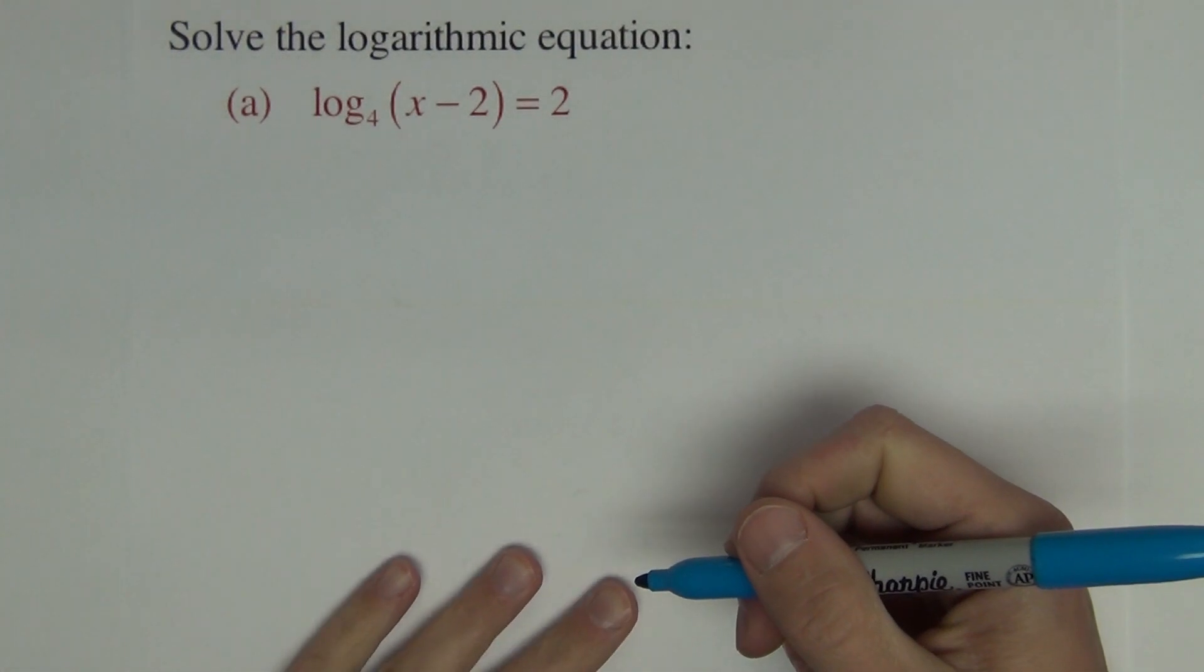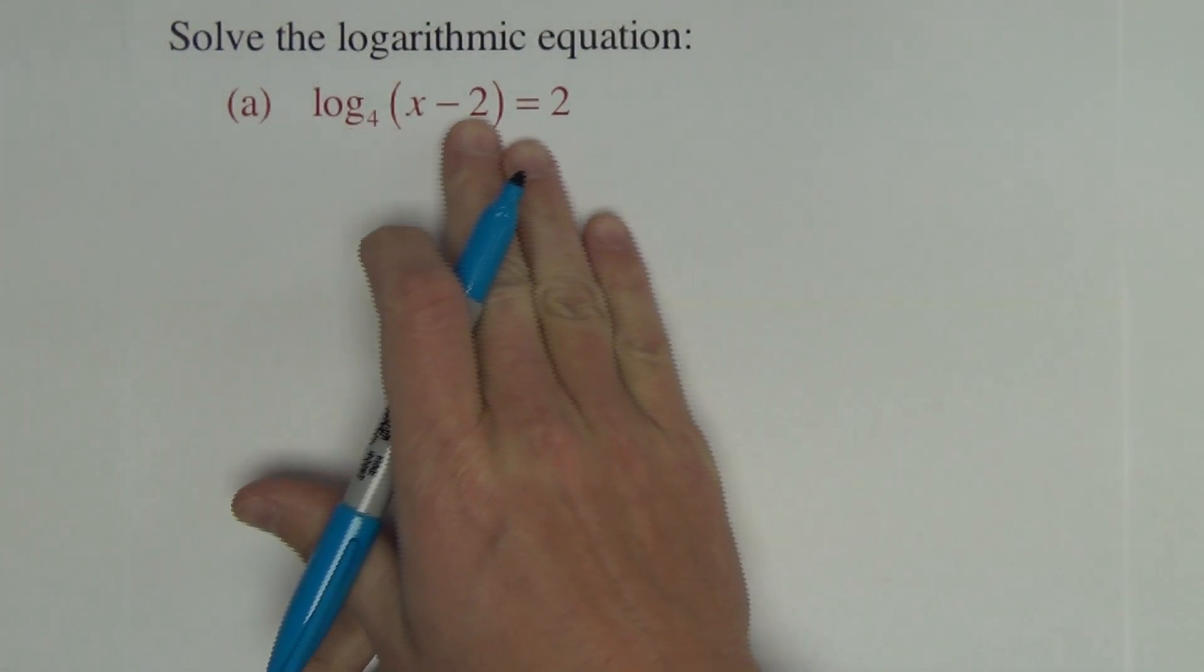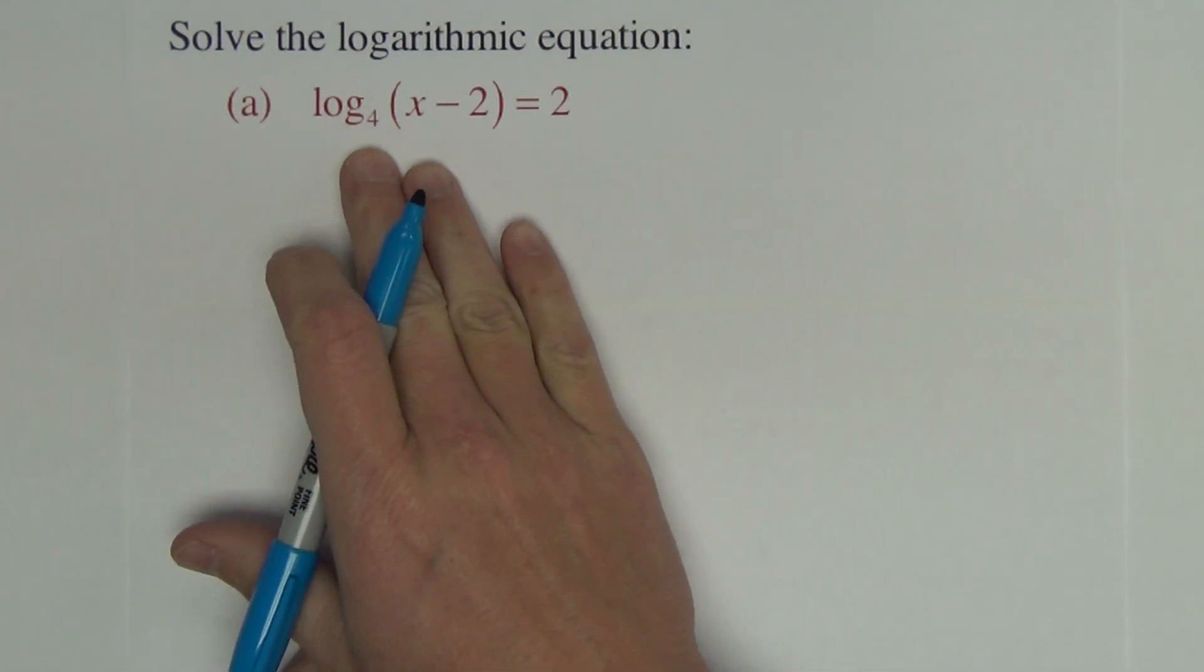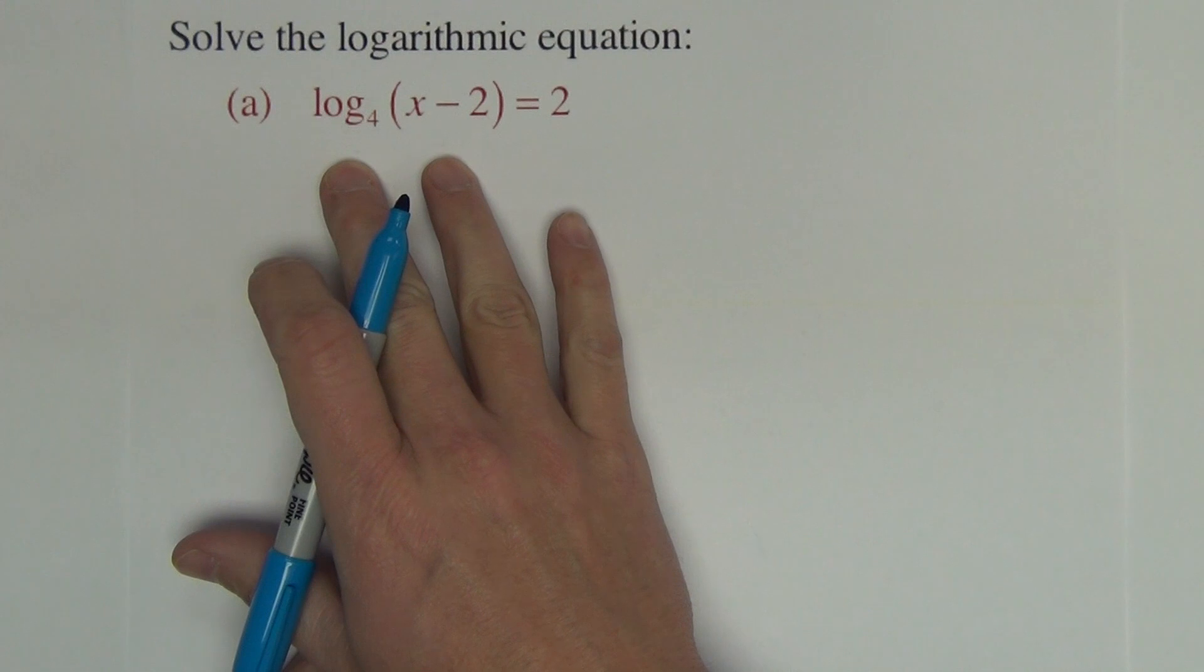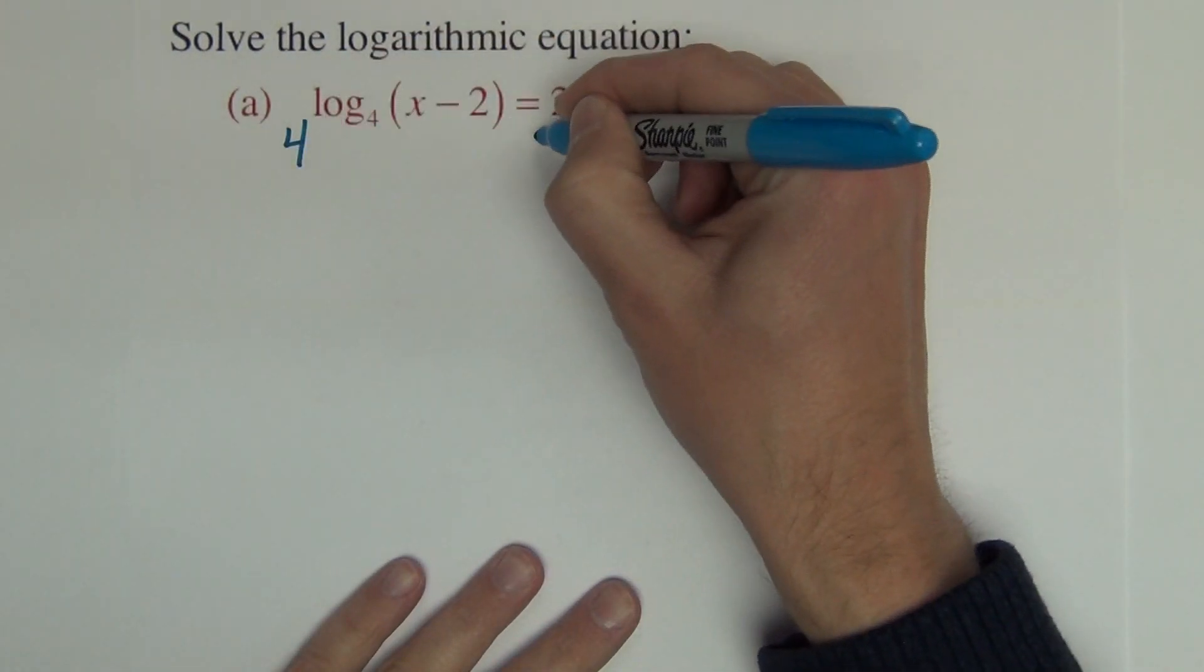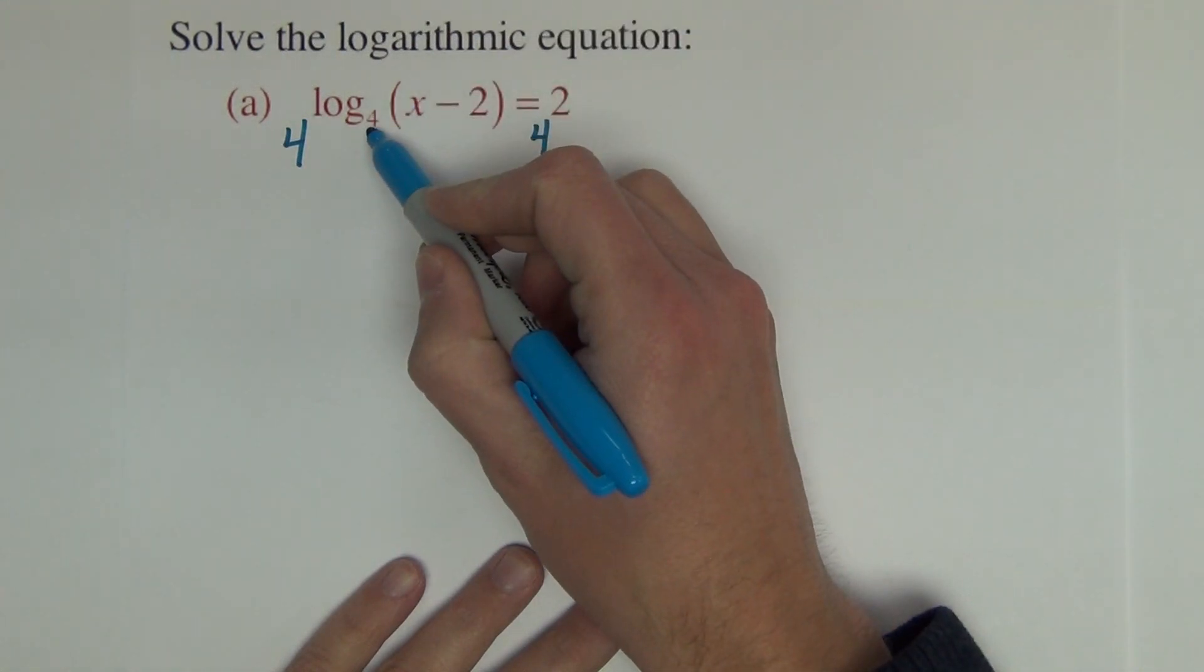The first thing to do when solving a logarithmic equation is make sure the logarithm is all by itself on its side of the equation. I'm going to exponentiate this equation and it leads me to a rewriting. I'm going to raise this up as an exponent above a 4. I'm choosing 4 because it's log base 4.